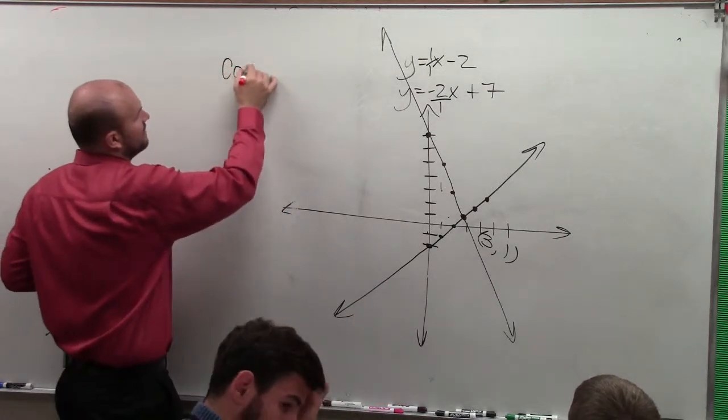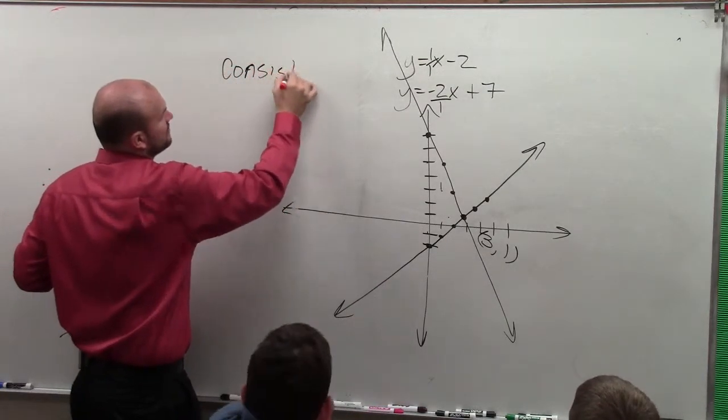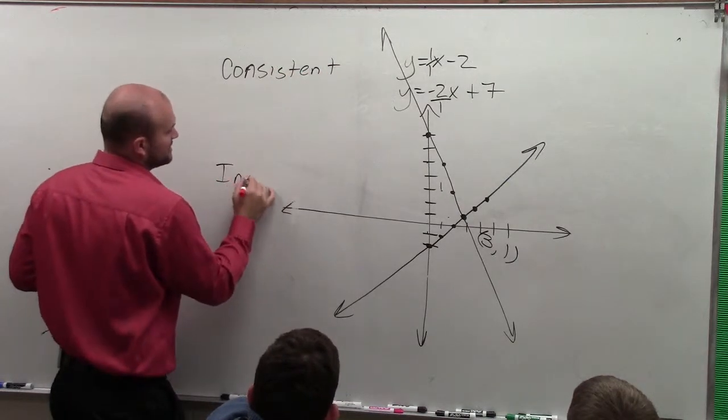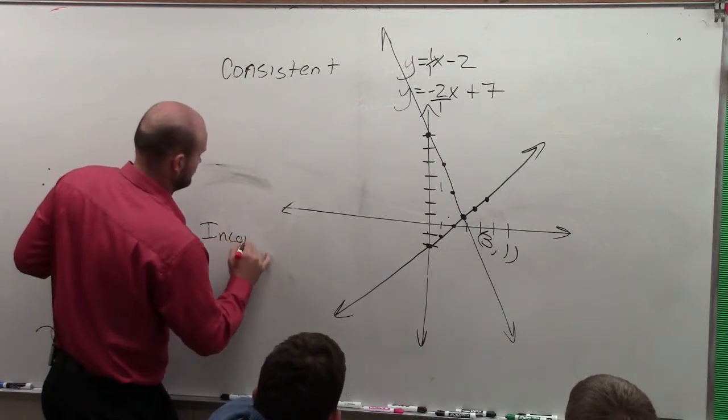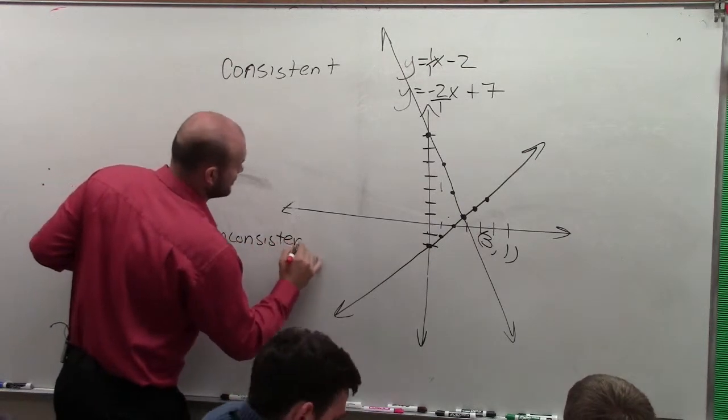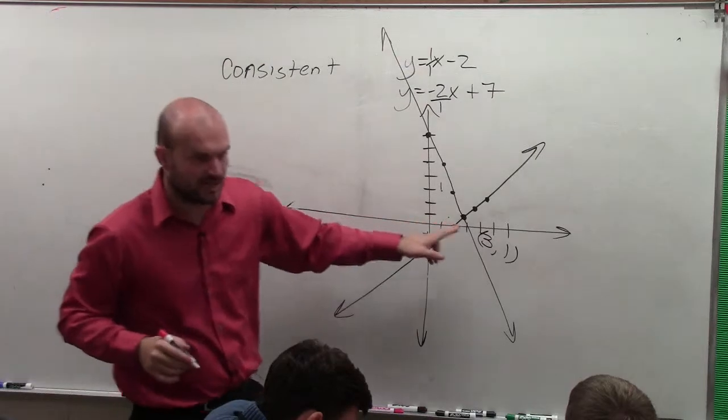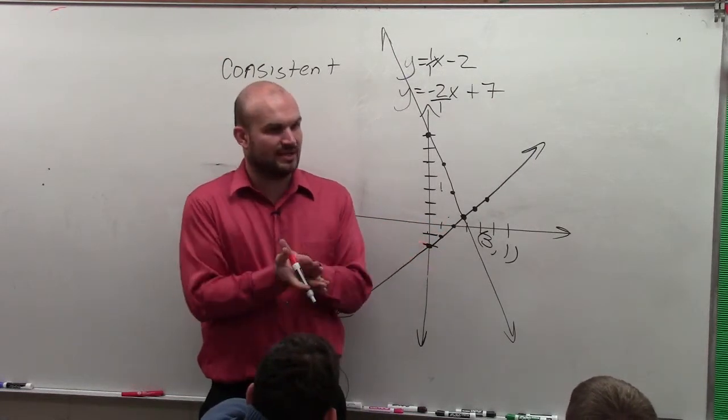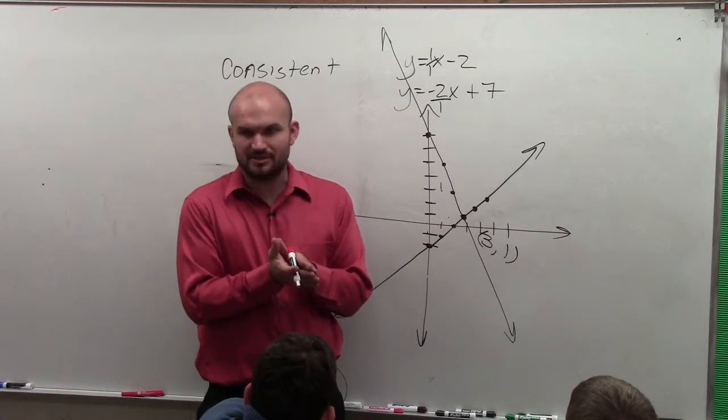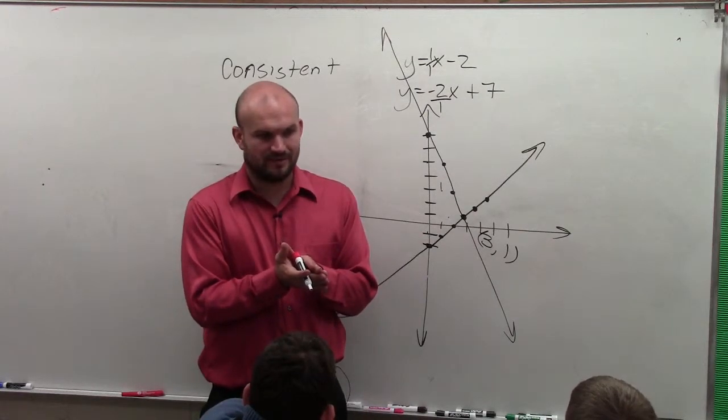So you can have a consistent or you can have an inconsistent. The solution is going to be the point where they intersect. Now, let's think about the problem we did last class, the last problem we did. When the lines are on top of each other, how many times does it intersect itself? Infinite.